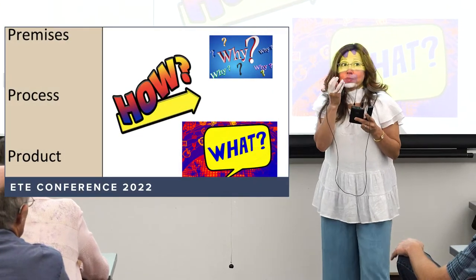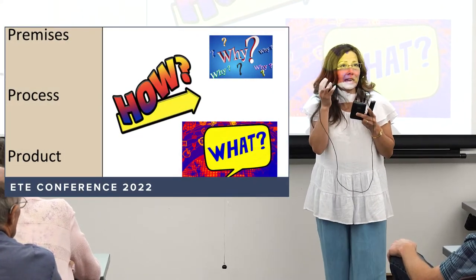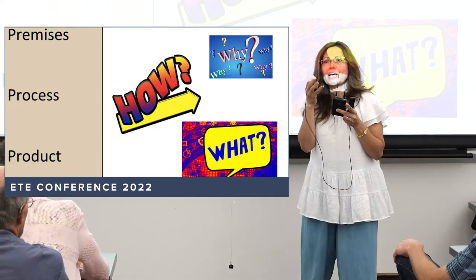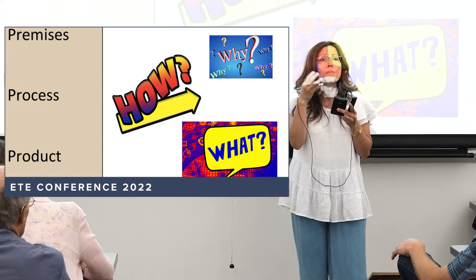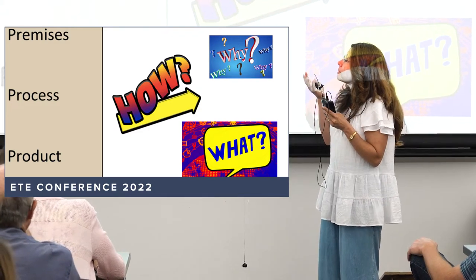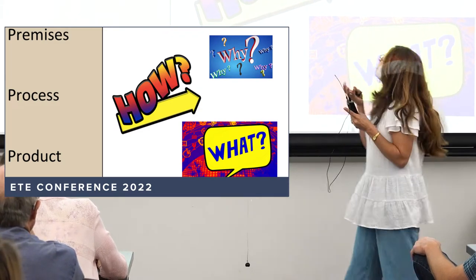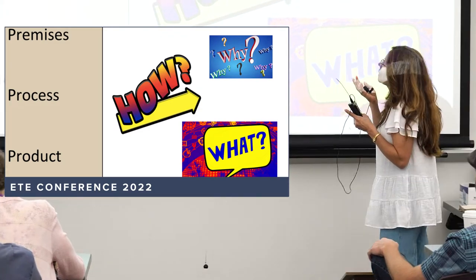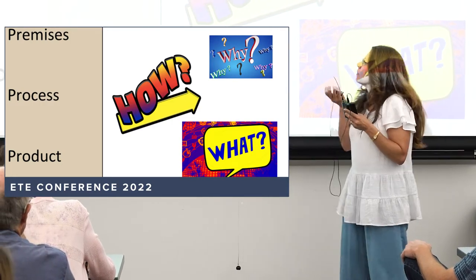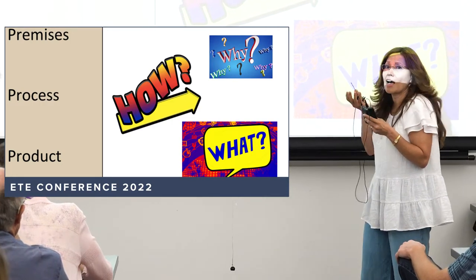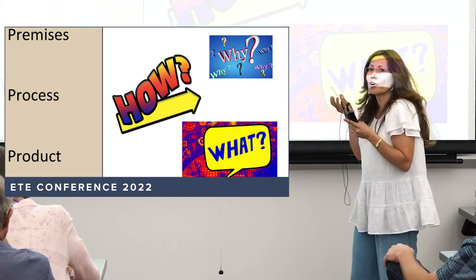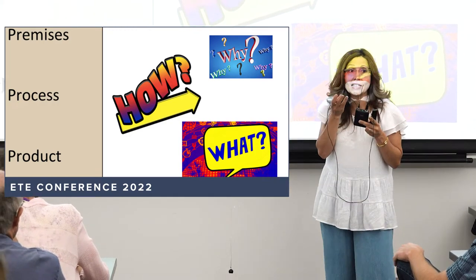There are three aspects of perspective taking — three concepts associated with it. When designing an assignment, make sure you invite students to think about the premises, the process, and the product. The premises is the why: why do I believe what I believe? The process is the how: how do I come to these conclusions? And the product is what is it that I believe?